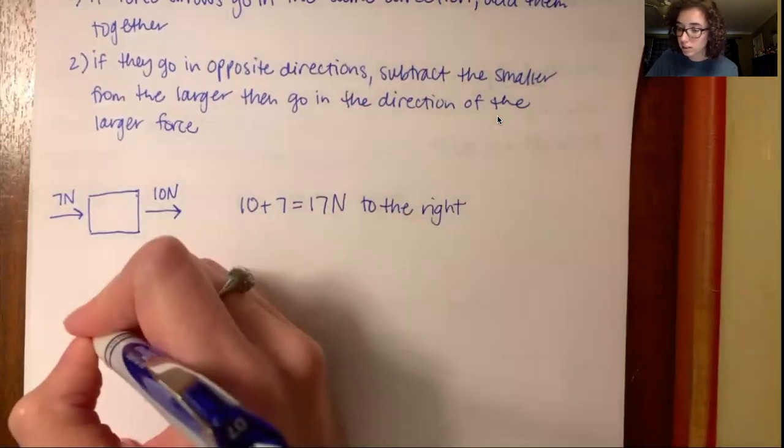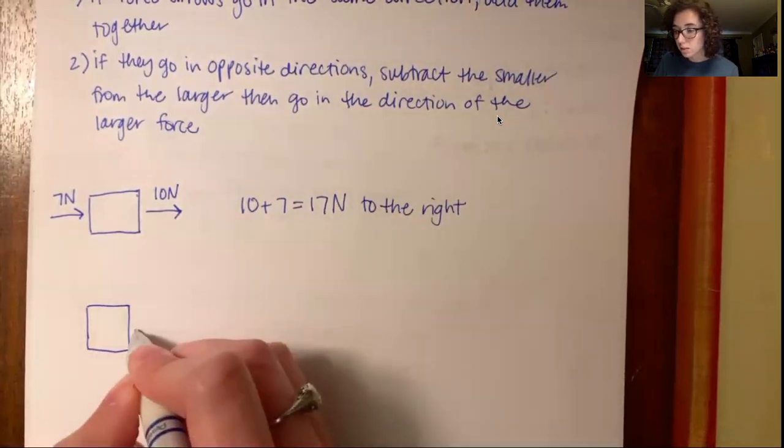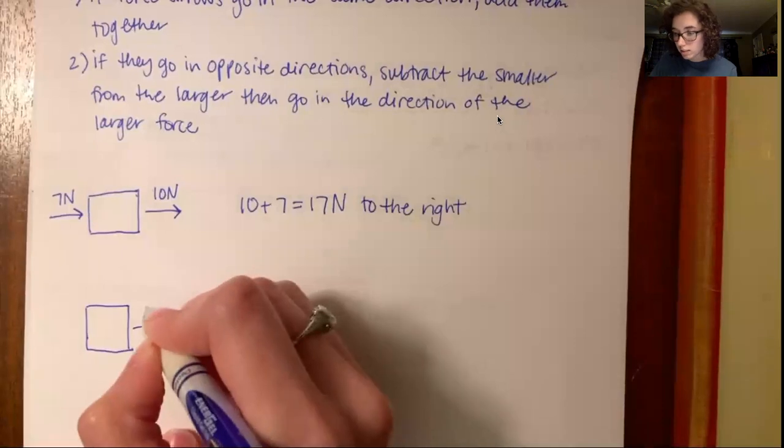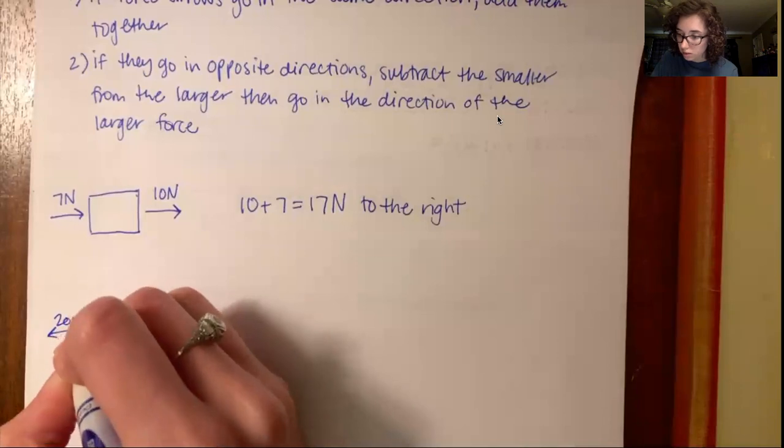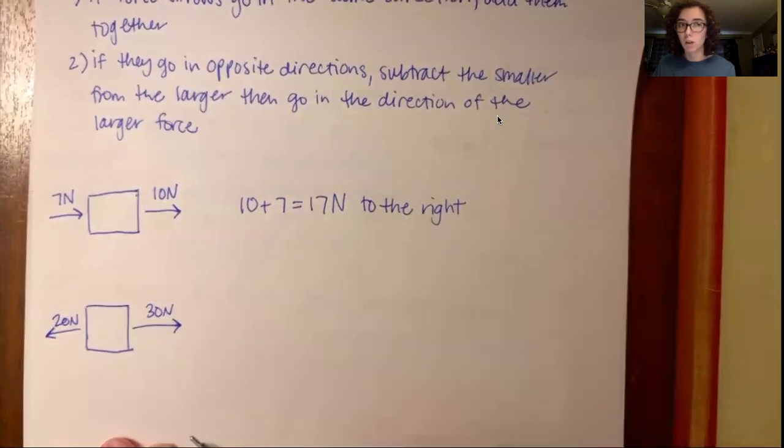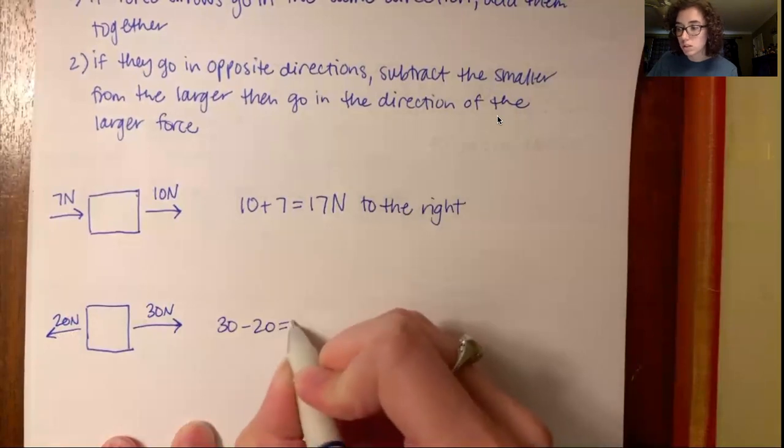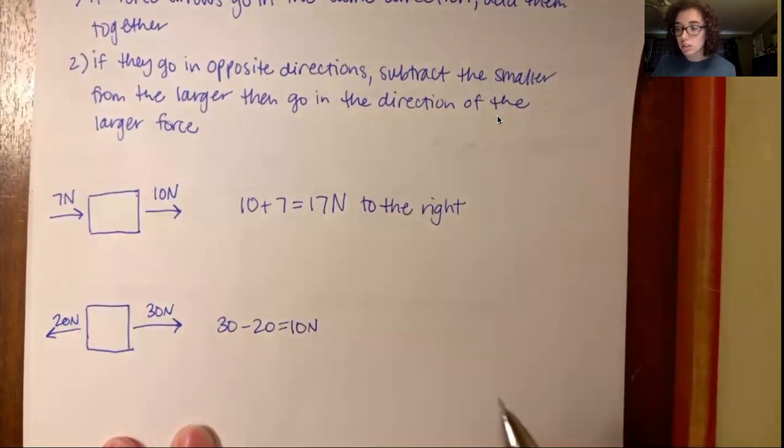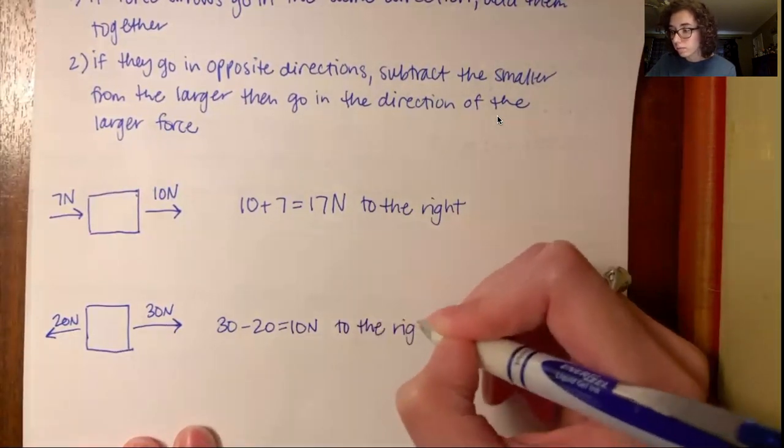Okay, so now let's have another example. So this time, let's say the arrows go in opposite directions. So you have one arrow going this way, and let's say it's 30 Newtons. We have an arrow going this way, and that's 20 Newtons. Okay, so if they go in opposite directions, subtract the smaller from the larger. So we'll do 30 minus 20 equals 10 Newtons. And then it goes in the direction of the larger force. So we have 30 Newtons to the right and 20 Newtons to the left, so we're going to go 10 Newtons to the right.